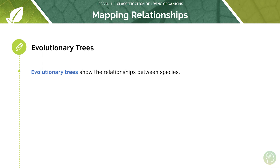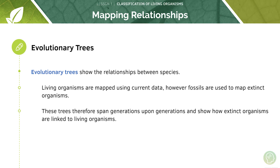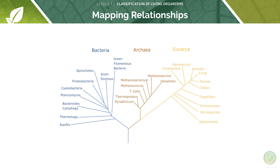Evolutionary trees show the relationship between species. Living organisms are mapped using current data, however fossils are used to map extinct organisms. These trees span generations upon generations and show how extinct organisms are linked to living ones. Organisms that are closer together on the evolutionary tree, like Aquifex and Thermotoga, are more closely related than Aquifex and Diplomonas, because they branch at closer points of the tree. All of these organisms have originated from a single common ancestor — that's what they all have in common.